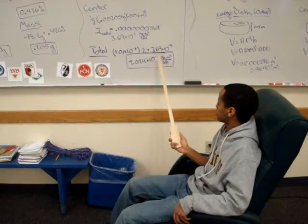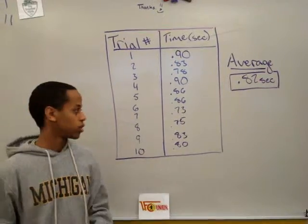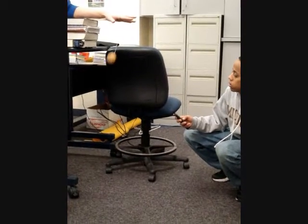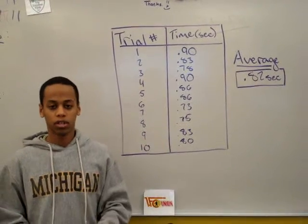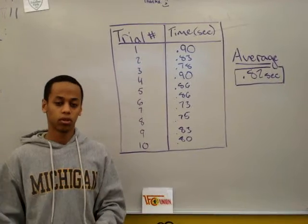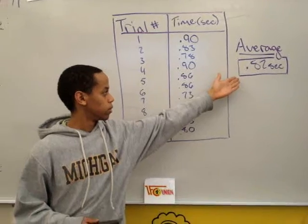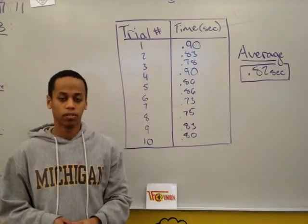So doing the trials as shown here. Alright, 3, 2, 1, go. We measured the time it took to extend the yo-yo. The average that we got at 10 trials was 0.82 seconds, which was fairly fast.